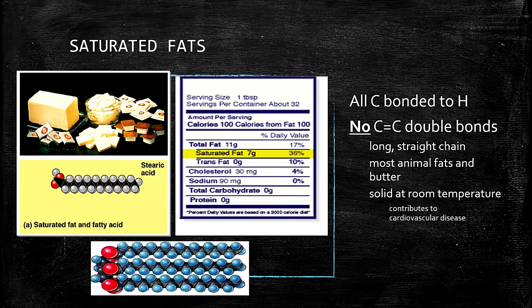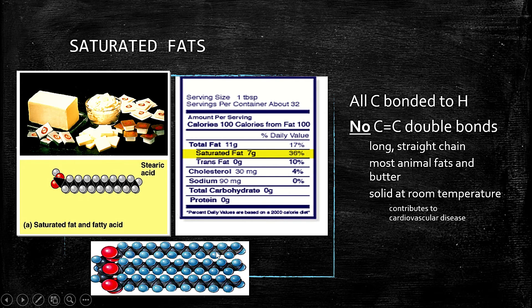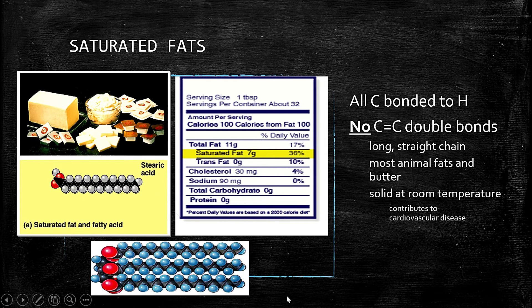Now let's discuss the difference between saturated fat and unsaturated fat. Saturated fat means all carbons have a bonded hydrogen — there are no double bonds between carbon atoms, resulting in a long straight chain of carbon and hydrogen. Because of this, the structure is rigid with no room for movement, kinks, or curvatures. Saturated fats are typically found in butter and animal fats such as pork and beef fat. Since they remain solid at room temperature, pork and beef fats are examples of saturated fats.